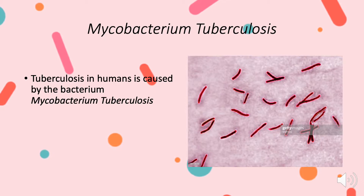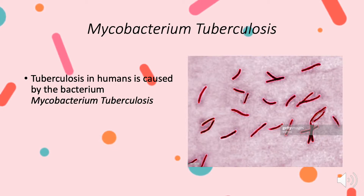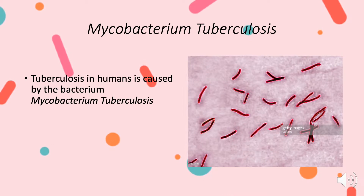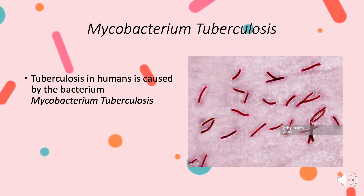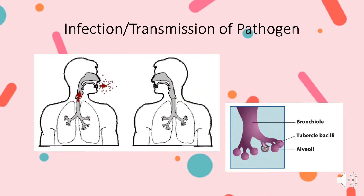The cell wall of this particular bacterium is different in that it is made up of acidic acids called mycolic acids. This helps the bacteria by making it resistant to drying and use of chemicals. These mycolic acids are where the bacterium gets its name.